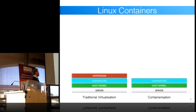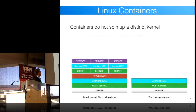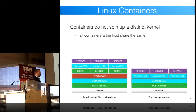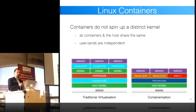With traditional virtualization, we have a hypervisor, and on this hypervisor we emulate a complete virtual machine. Within that virtual machine we spin up our own kernel, the user land, and all the services via an init system. With containers, it's a little bit different. Containers do not spin up a distinct kernel for each guest — they use the host kernel. They just spin up a distinct user land. The host user land could be Tiny Core Linux as with boot2docker, and the different containers run their own user lands like Ubuntu, CoreOS, or Alpine Linux.